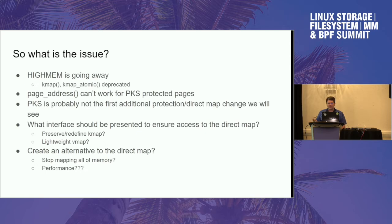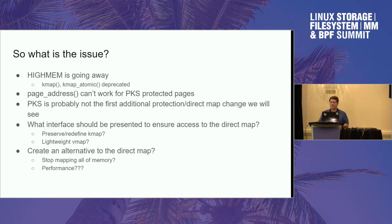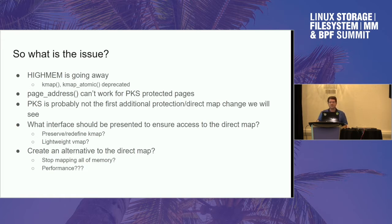We're growing this alternative access, which is page_address. Obviously page_address isn't new — it's there and it's been used. But the problem is it can't work because there's no corresponding unmap, no corresponding unlock. PKS is probably not the first situation where we have extra protections on the direct map and we want to temporarily remove those protections and then restore them. We also have other places where we're looking to split the direct map. So just adding page_address whenever somebody needs access, when hi-mem goes away, I don't think is a good solution going forward. We need to bake in the idea that just accessing the direct map isn't going to be viable with all the extra protections we're doing.